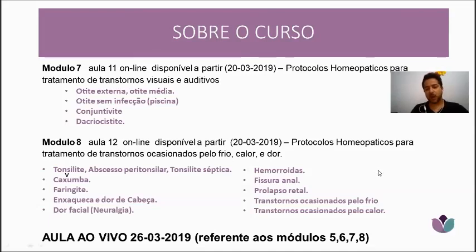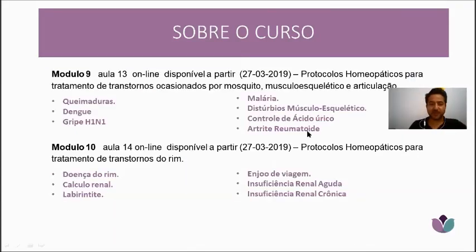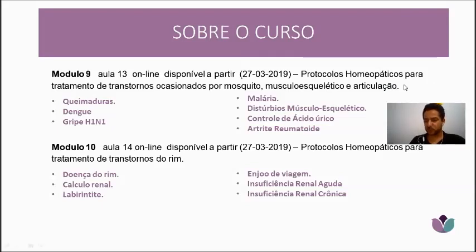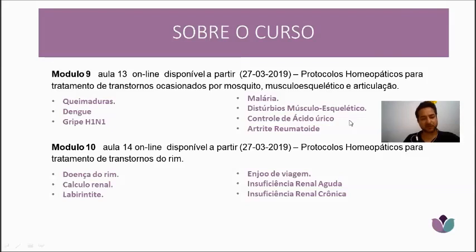On the 26th there will be a live class to recap all those modules and answer questions again. Module 9 covers burns, homeopathic treatment for dengue, H1N1, malaria, musculoskeletal disorders, uric acid control, and rheumatism — both from excess uric acid and from the rheumatoid factor — with their specific protocols.